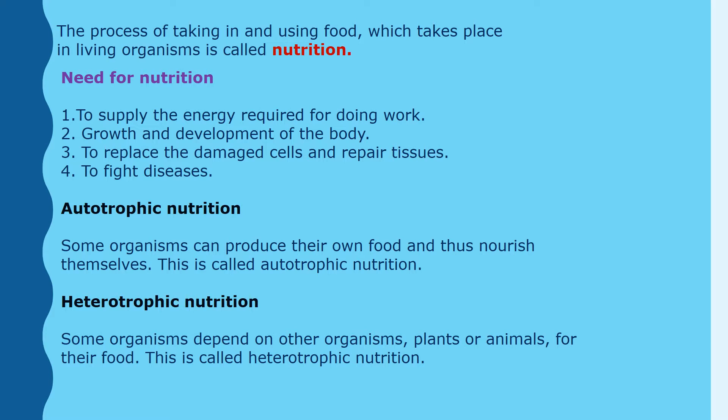There are two types of nutrition: autotrophic nutrition and heterotrophic nutrition. Some organisms can produce their own food and nourish themselves — that is called autotrophic nutrition. Whereas some organisms depend on other organisms such as plants or animals for their food — that is called heterotrophic nutrition.